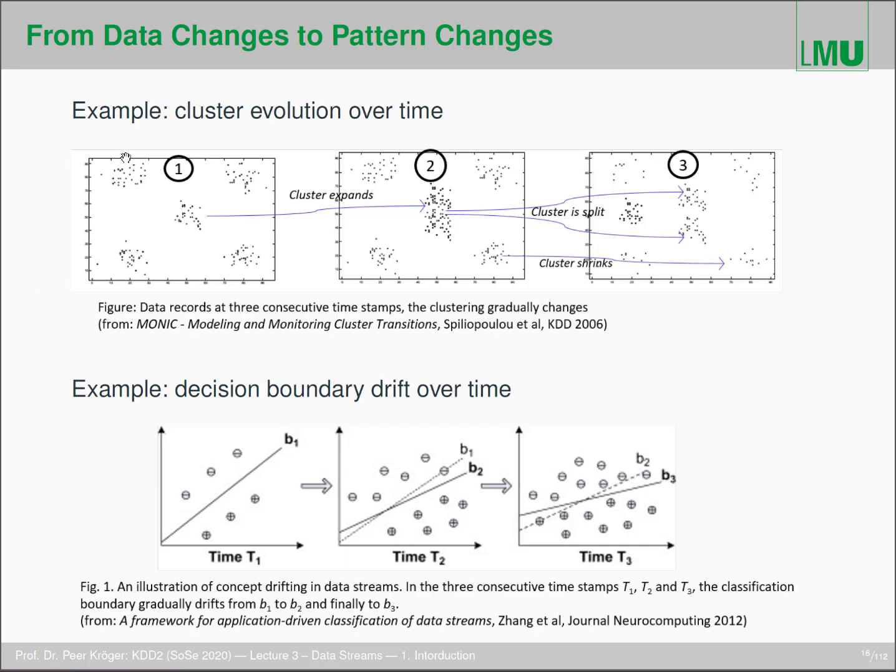So what can happen if you look at data that changes? We talked about how if the data is changing, patterns can also change. Here you see an example where clusters evolve over time. Here you have one, two, three, four, five clusters. For example, because new points are coming in and maybe you also forget about old points.